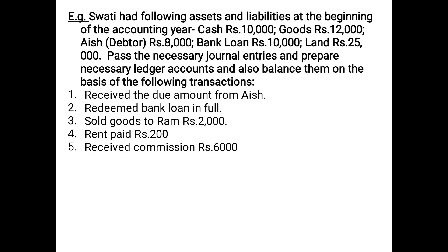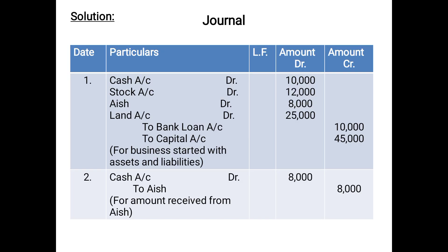Coming back to the question, there are further transactions. The first transaction: received the due amount from Ash. Ash is a debtor and the amount due from her was 8,000; the same amount has been received in full. So the entry will be: Cash Account debited 8,000, To Ash 8,000.